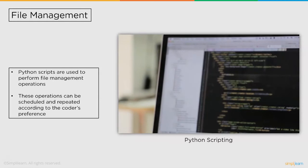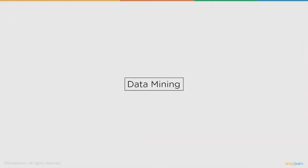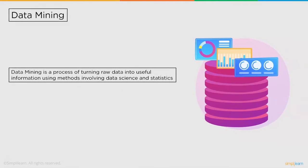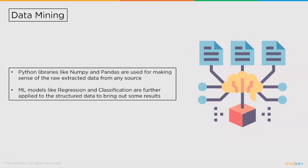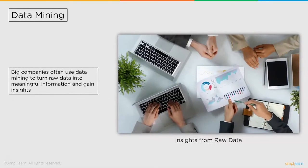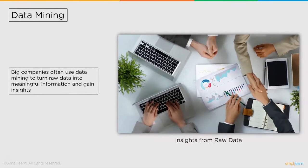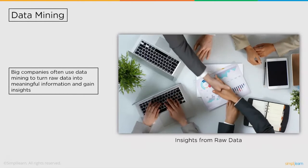Followed by file management, we have data mining. Data mining is a process of turning raw data into useful information using methods involving data science and statistics. Python libraries like NumPy and Pandas are useful for making sense of raw extracted data from any source, including a local file or a website on the internet. Machine learning models like regression and classification are further applied to the structured data to bring out results. Big companies often use data mining to turn raw data into meaningful information and gain insights.